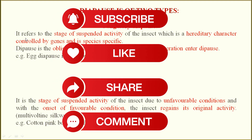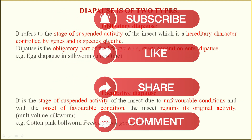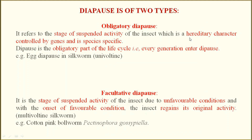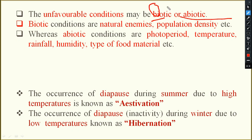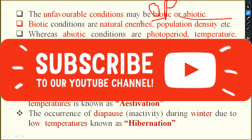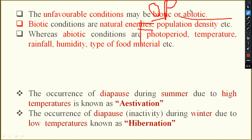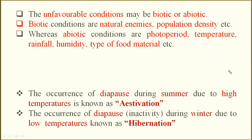Obligatory diapause refers to the stage of suspended activity that is hereditary — it is completely governed by the gene. Whether the unfavorable situation comes or not, the insect will definitely undergo diapause. The unfavorable condition may be biotic — caused by other insects, predators, or food — or abiotic, such as rainfall or temperature.